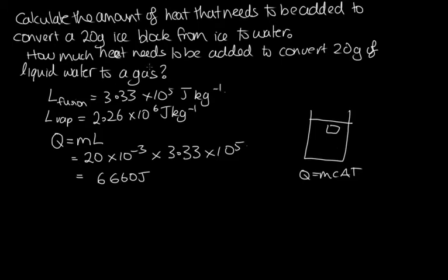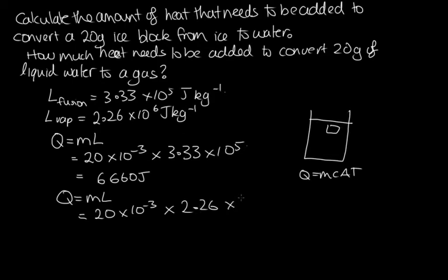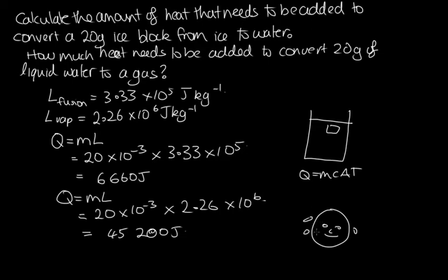To calculate how much heat we need to add to cause the water to turn into gas, we use q = mL, but now using the latent heat of vaporization. The mass is 20 × 10⁻³ kilograms, and we use 2.26 × 10⁶. Solving this, we get 45,200 joules. This is actually why you have evolved to sweat on a hot day. You produce liquid on your skin, which then evaporates. As it turns into a gas, it absorbs this energy, so if you were to evaporate one tablespoon of sweat, it would require approximately this much energy, cooling you down.